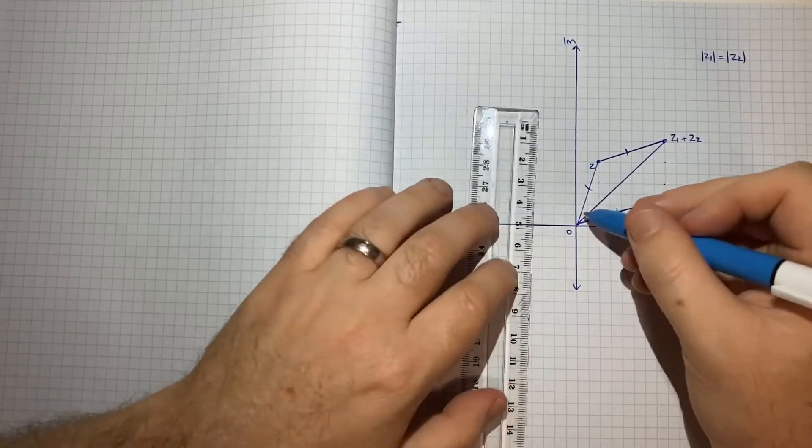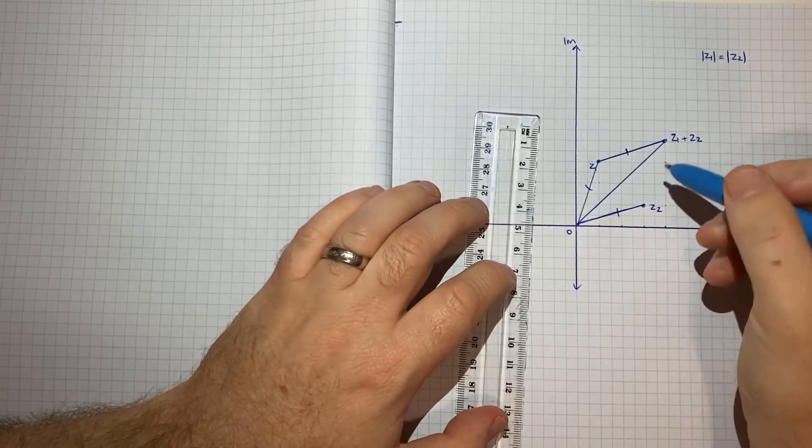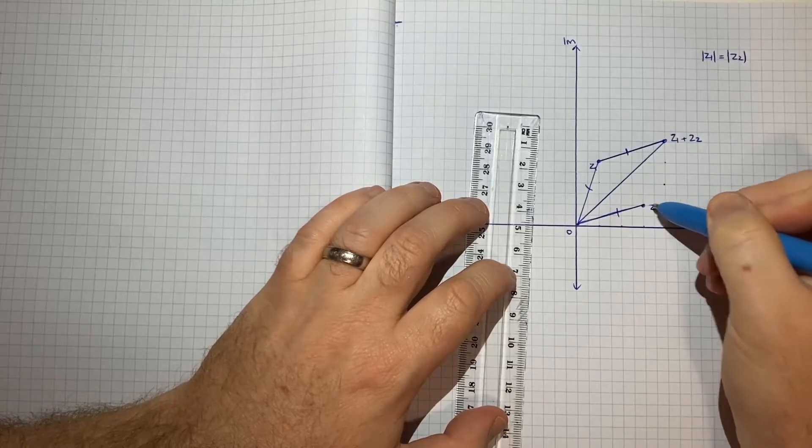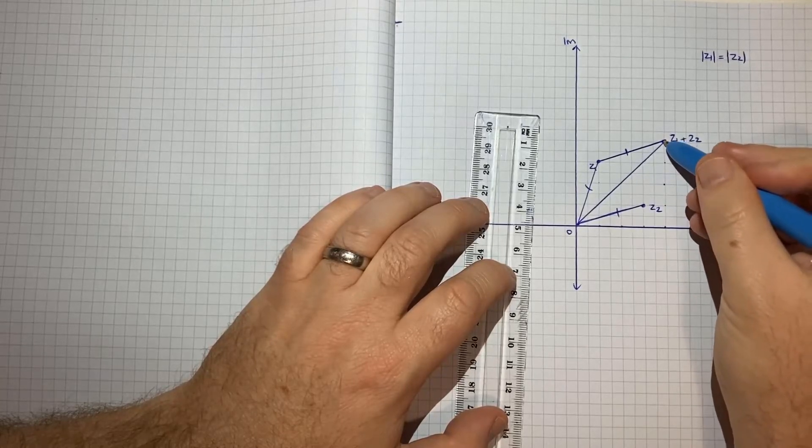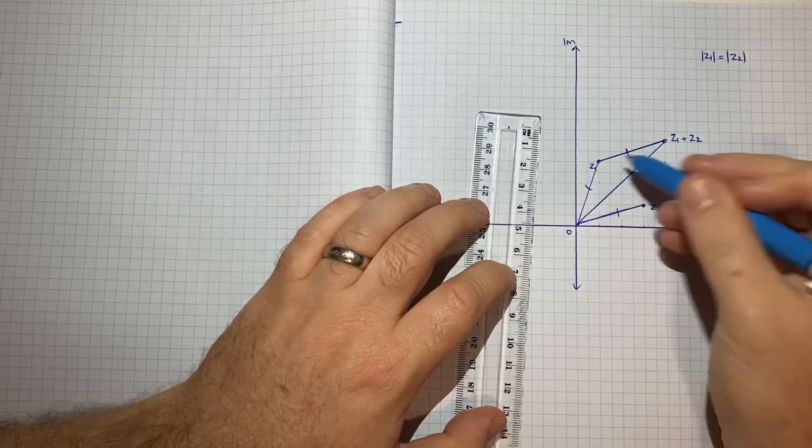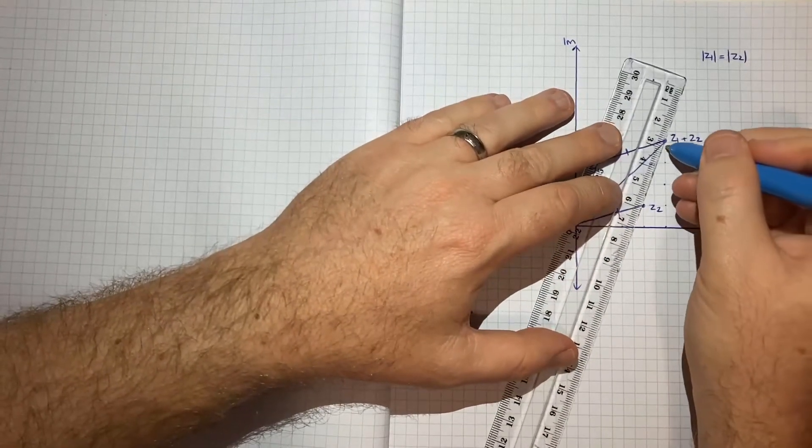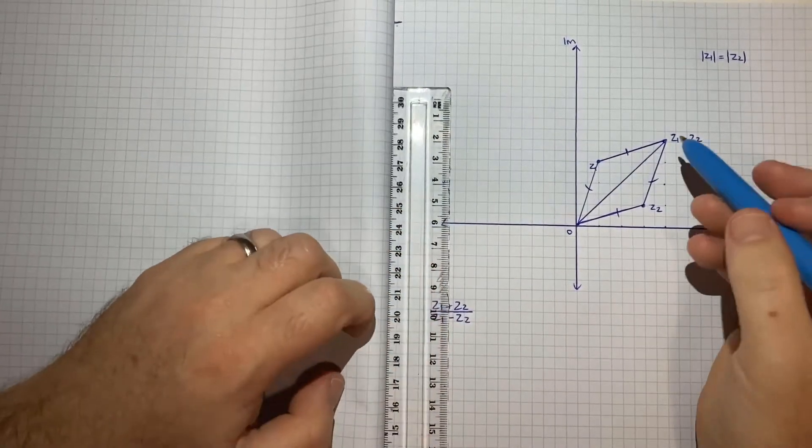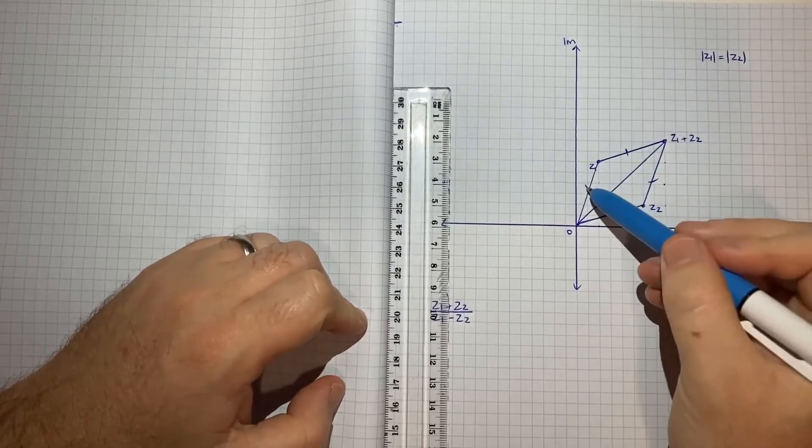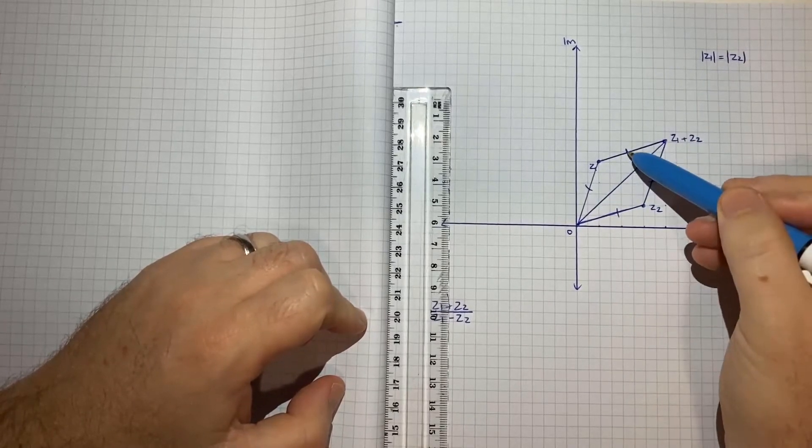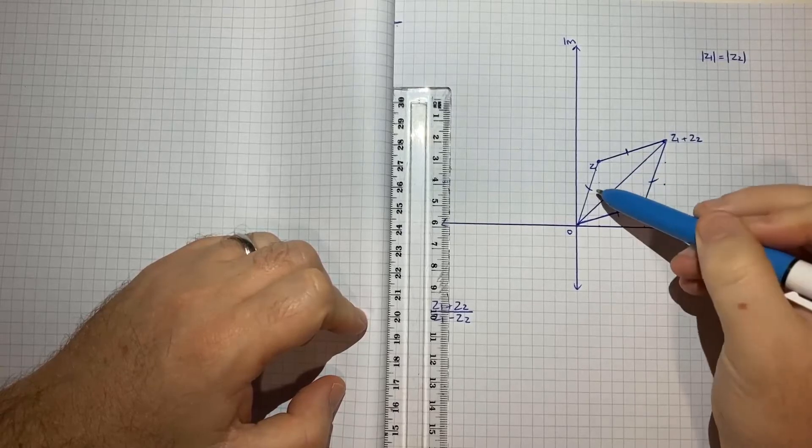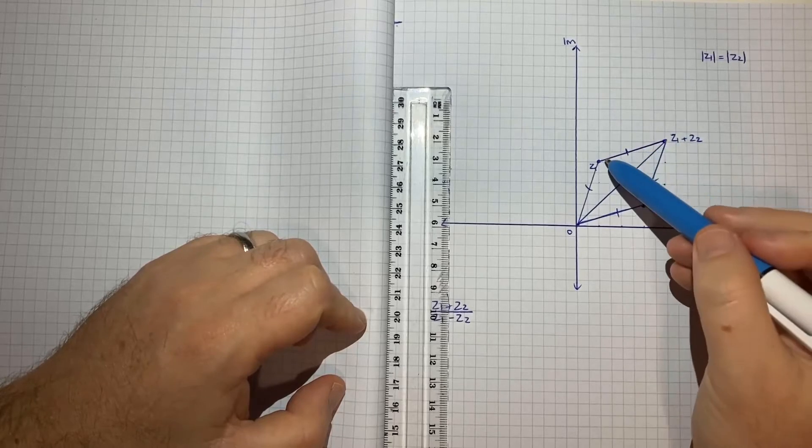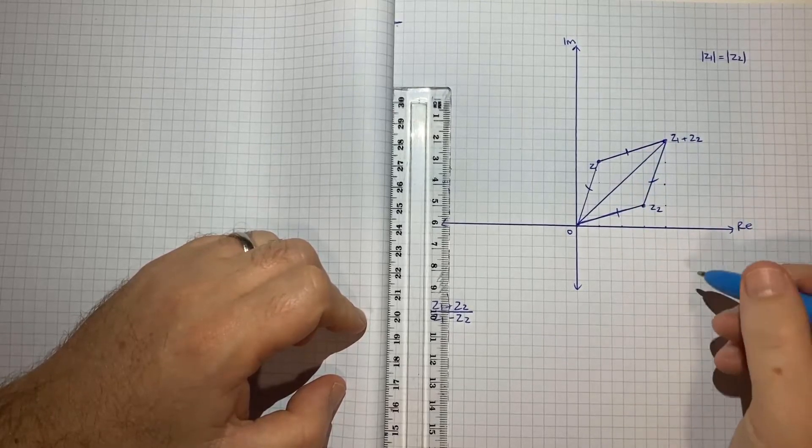And using a similar approach, to get from z2 up to z1 plus z2, I move over 2 and then up 2, 4, 6. And that's exactly what I did here: over 2 and then up 2, 4, 6. So this line here will have the same length as this line here. And given the modulus of z1 and z2 are equal and these two are equal, and we've shown this is equal to this and this is equal to this, it means all the sides are equal. So not only do we have effectively a parallelogram, but it's also a rhombus.